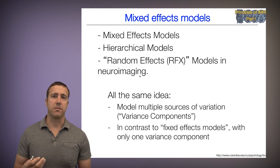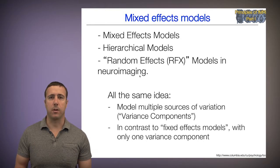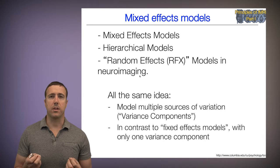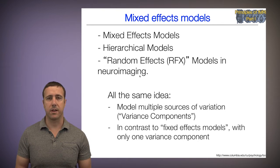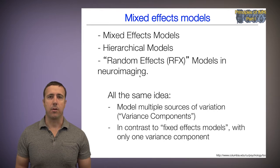And these models stand in contrast to what we call fixed effects models in neuroimaging with only one variance component. And we mean something very specific in neuroimaging when we say fixed effects model or random effect model. Really what we mean is we model subject or participant as a random effect or as a fixed effect. And I'll explain that more in the following slides.